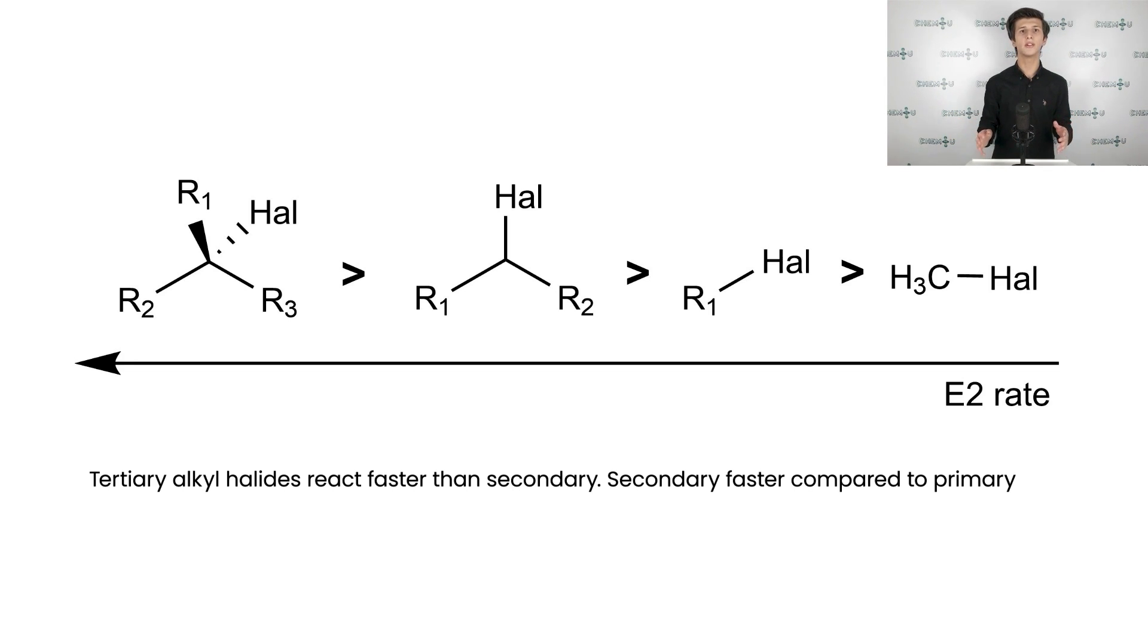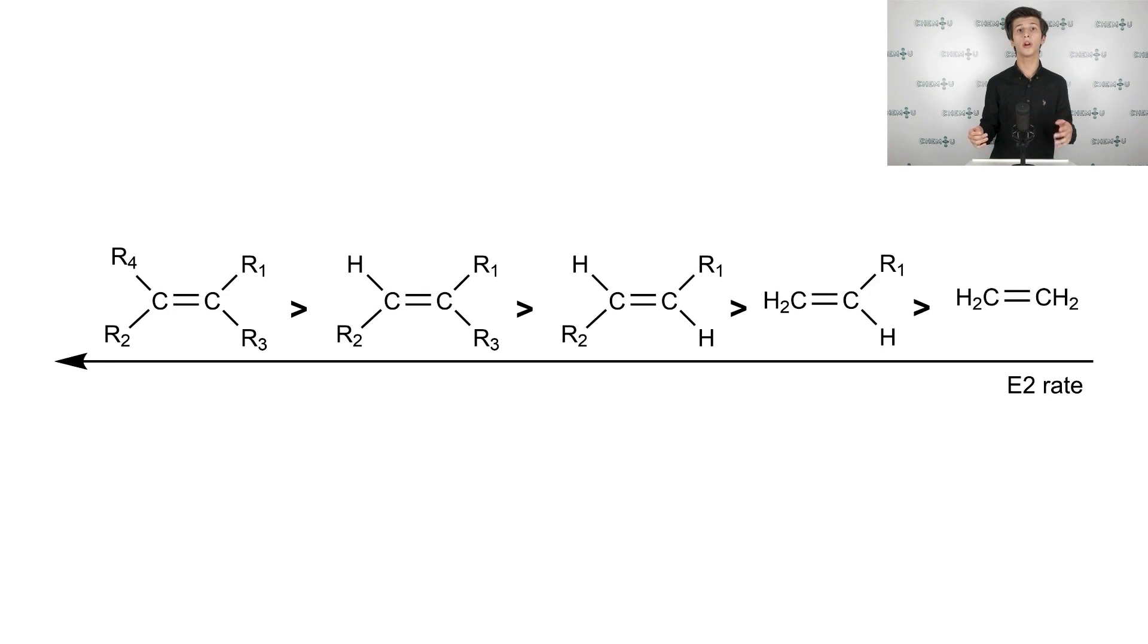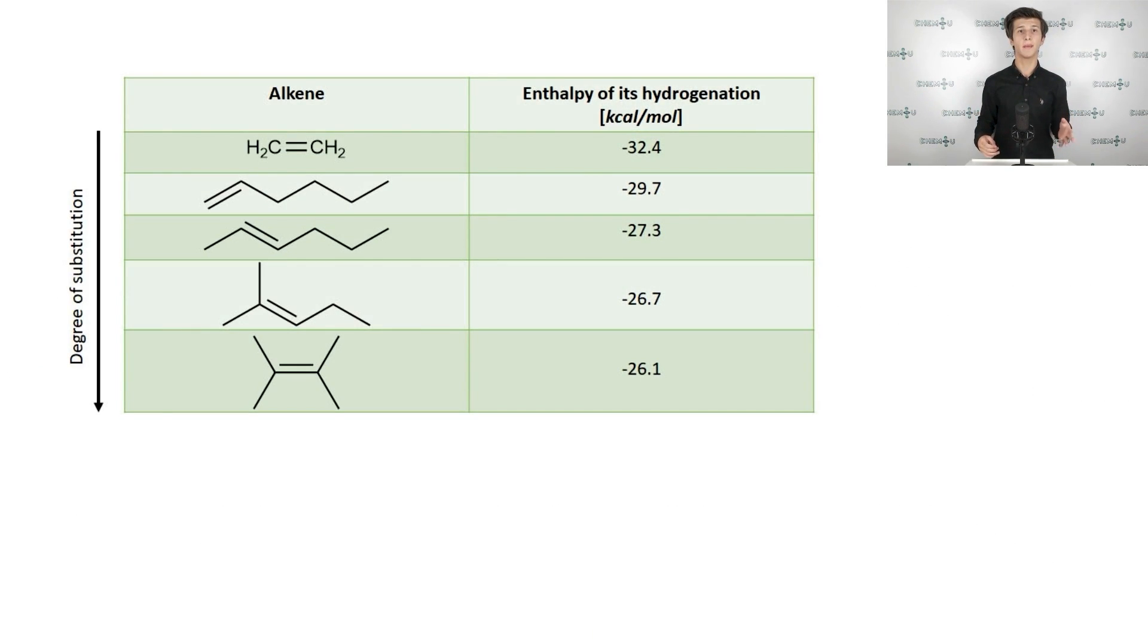First, the bases are not as sensitive to steric hindrance as nucleophiles, because protons that should be abstracted are small and usually on the outsides of the molecules. Second, the more highly substituted alkyl is, the more stable it is. It is supported by thermodynamics of hydrogenation reactions of different alkenes, presented on the slide. So the higher is substitution grade, the less exothermic hydrogenation reaction is.